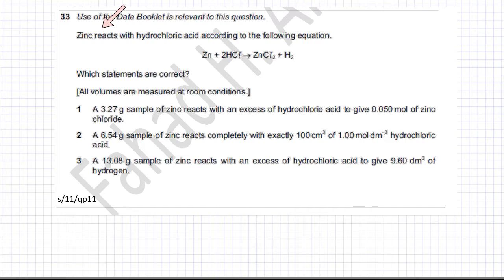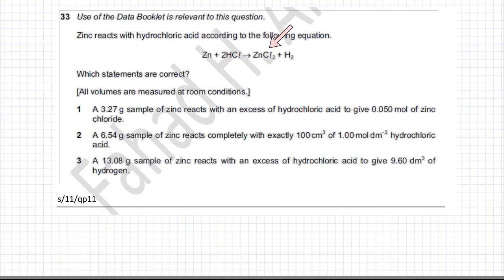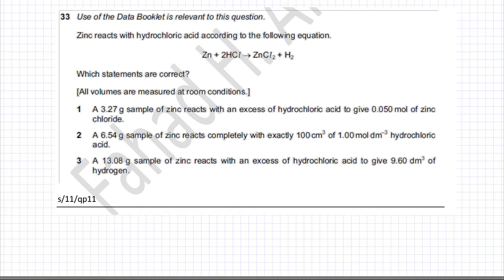The question states that zinc reacts with hydrochloric acid according to the following equation: zinc plus 2HCl reacting to produce zinc chloride and hydrogen gas. That's already given. We're asked which of the statements are correct, so we're going to check them one by one.